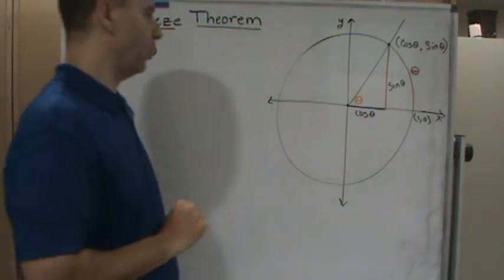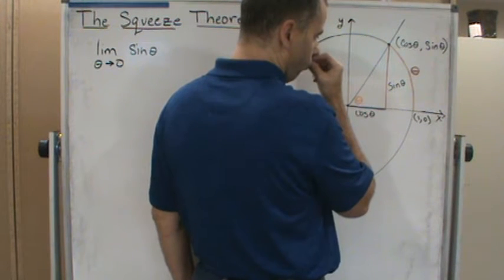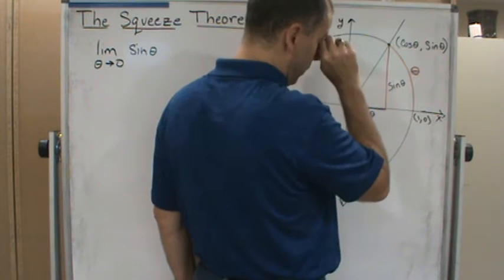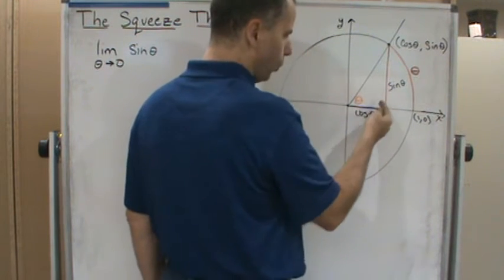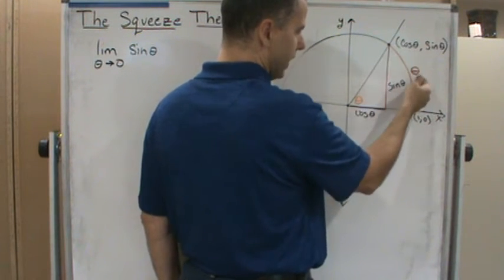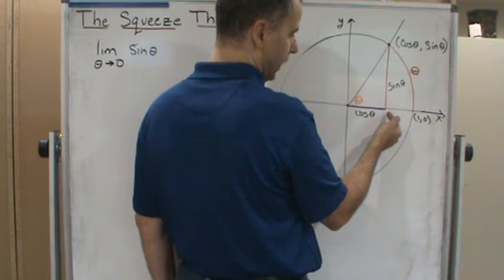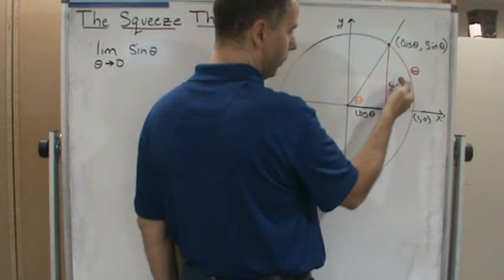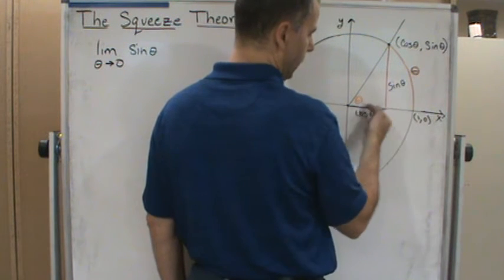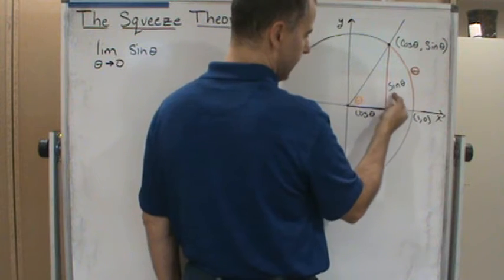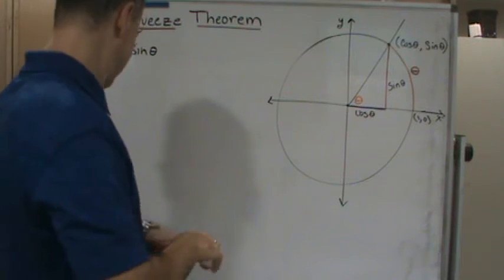So what do we know? For theta between zero and pi over two, we see that this vertical line segment is always less than the arc length, which is also theta. So we know that sine theta is going to be between zero and theta at all times — that is, zero is less than sine theta which is less than theta, for theta in (0, π/2).